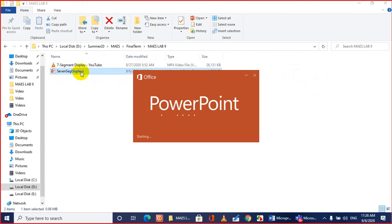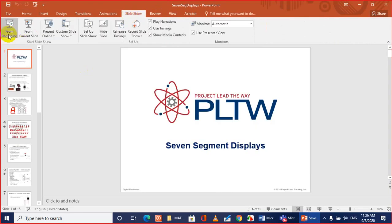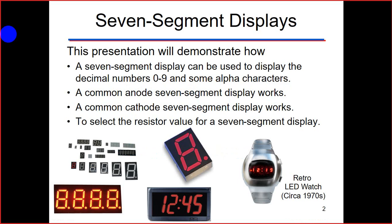The seven segment display is a very common display used in many electronic devices to display information. This presentation will demonstrate how a seven segment display can be used to display decimal numbers zero to nine and some alpha characters, how a common anode and common cathode seven segment display works, and how to select the resistor value for a seven segment display.